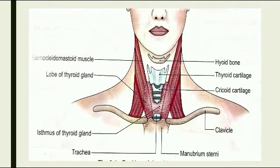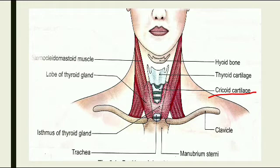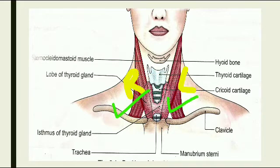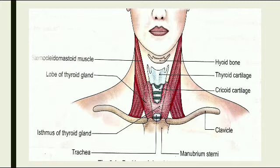In this diagram you can see the sternocleidomastoid muscle present on both sides of the neck, the hyoid bone, the thyroid cartilage below it, and then the cricoid cartilage, which descends downward to form the trachea. The thyroid gland is shield-like with right and left lobes connected by the isthmus, which is located at the C2 to C4 position.